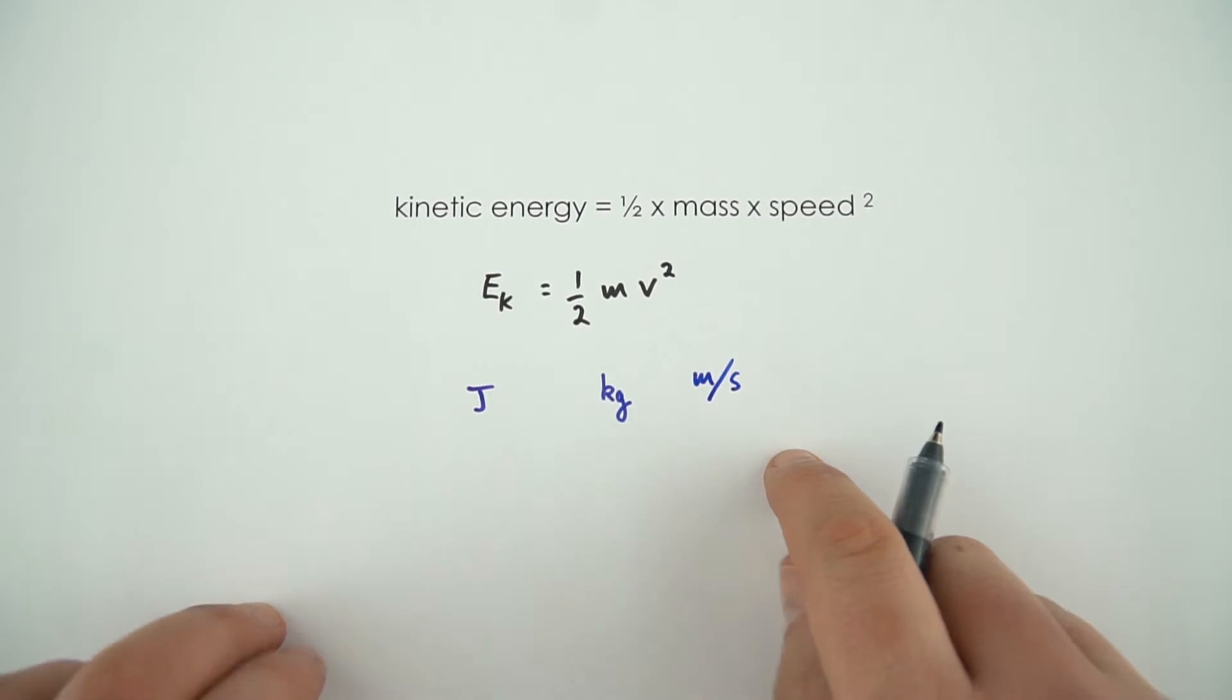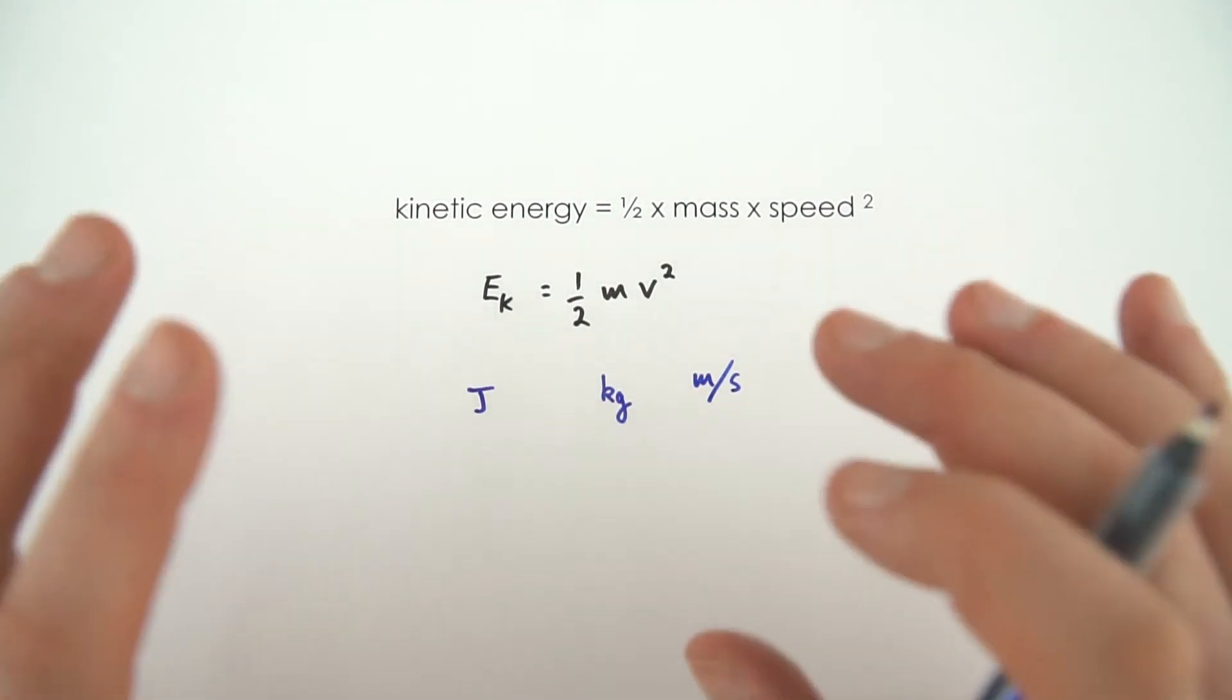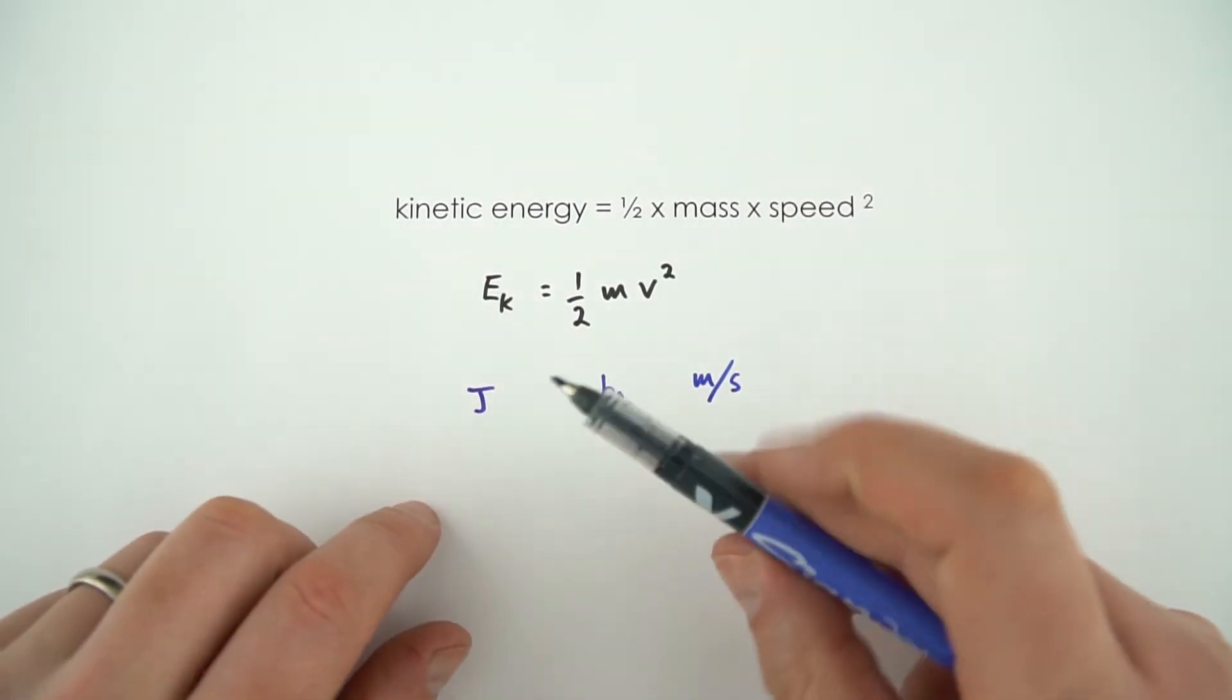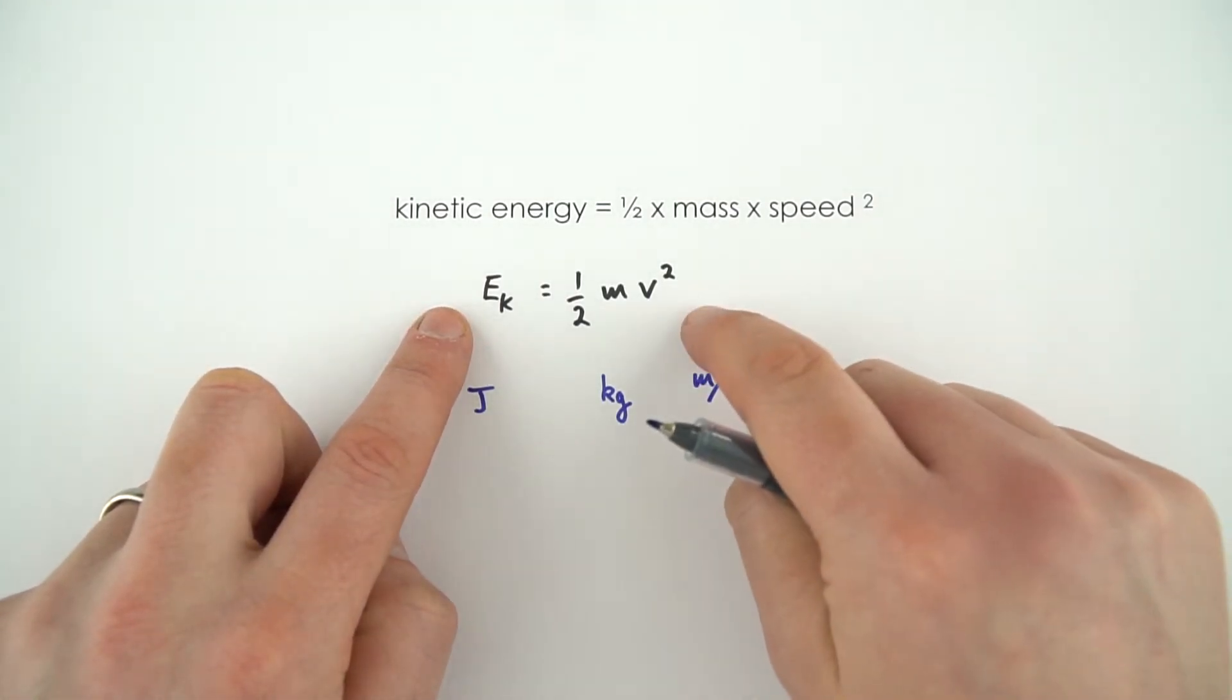Always convert any units in your question into these standard units, and then the rest of everything you're doing will make sense. I've got a couple of examples below showing how you can work out the kinetic energy of an object, or if you know the kinetic energy, how you can work out how quickly that object's going.